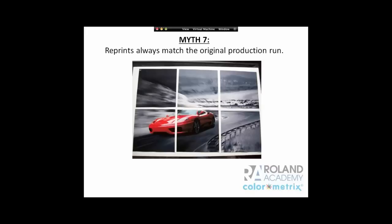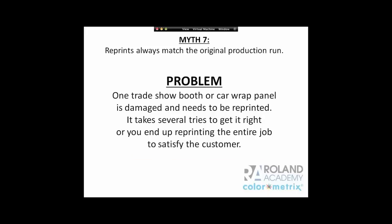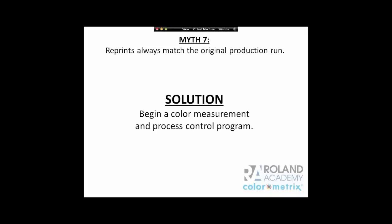The final myth from Part 1: Reprints are always going to match your original production run. If you concentrate on the grays in this image, you can see that a reprint of one corner does not match the others. For example, if you're reprinting a trade show booth or a car wrap panel that got damaged, the original might have been printed six months ago and your environment has changed — perhaps you've changed inks. The solution is to begin a color measurement and process control program. You can find the Part 1 webinar at colormetrics.com/colormyths.